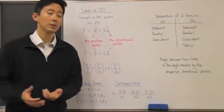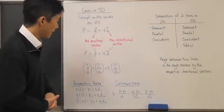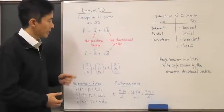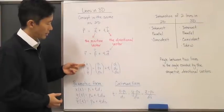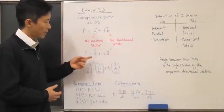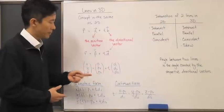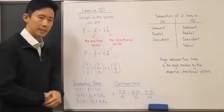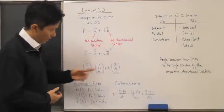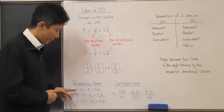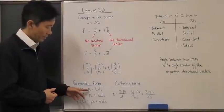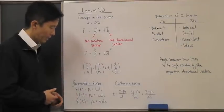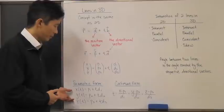If we look at what the parametric and Cartesian forms look like: r is just (x, y, z), p is (p₁, p₂, p₃), and d is (d₁, d₂, d₃), with parameter t. Equating components, the parametric form gives x(t) = p₁ + t·d₁, y(t) = p₂ + t·d₂, and z(t) = p₃ + t·d₃. That is the parametric form of the line.